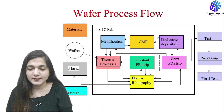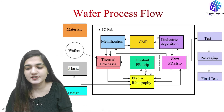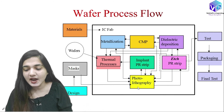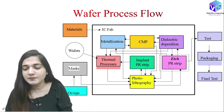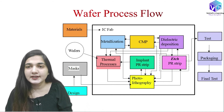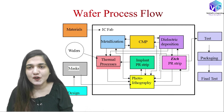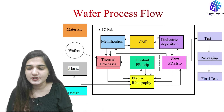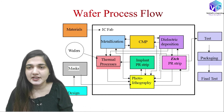Now looking at the wafer process flow, you can see all the processes occurring. We have already discussed up to the implantation and photoresist strip. After photolithography, we etch the photoresist strip, and then we etch the dielectric — silicon dioxide, polysilicon, or silicon nitride — to make masks or patterns on the surface. This process is called the etching process. From the wafer process flow, I hope you now understand where etching fits.